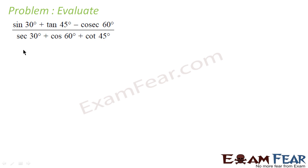Here sin 30° is 1/2, we know tan 45° is 1, cos 60° is 1/2, divided by sec 30° which is 2/√3, plus cos 60° is 1/2, plus cot 45° is 1.